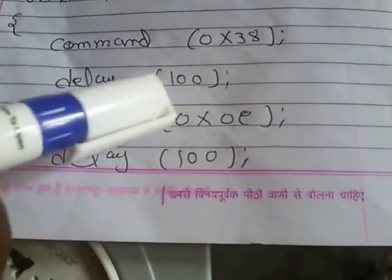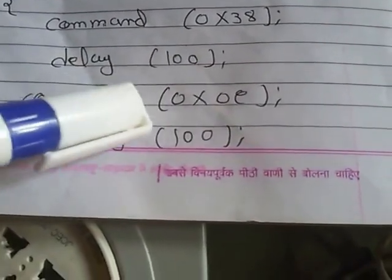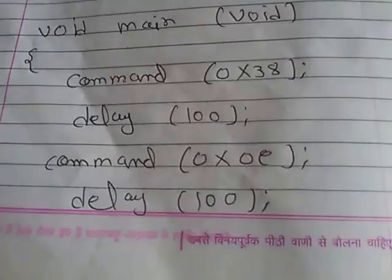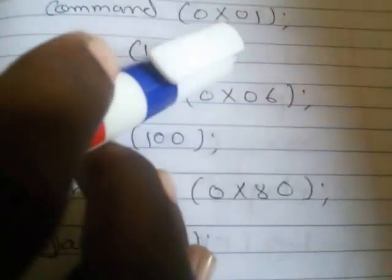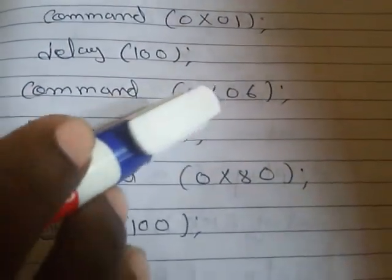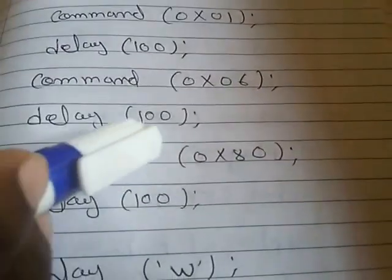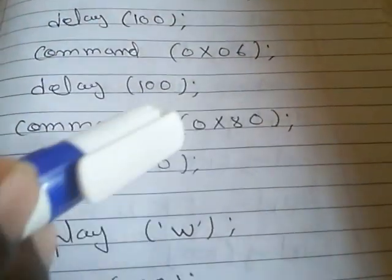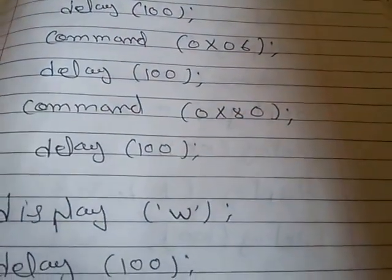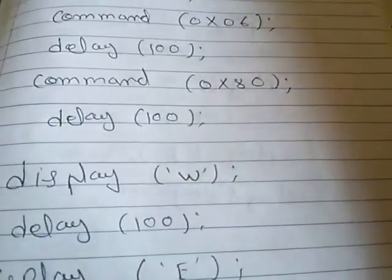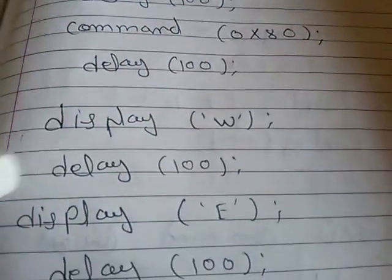Then we use command 0x0E — this is the cursor blinking command, which makes the cursor blink on the LCD screen. Command 0x01 clears the LCD. Command 0x06 shifts the cursor to the right. Then we give command 0x80, which means the data written on the LCD will start from the first location.